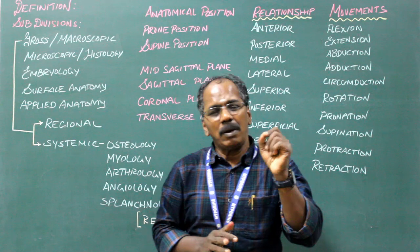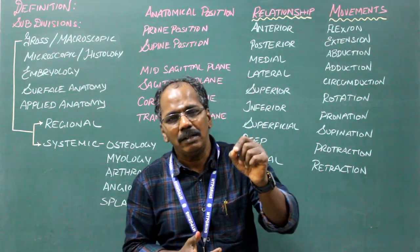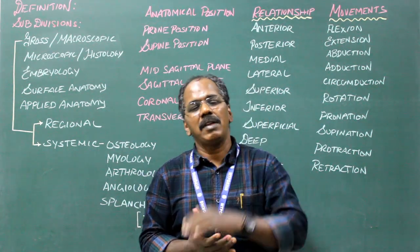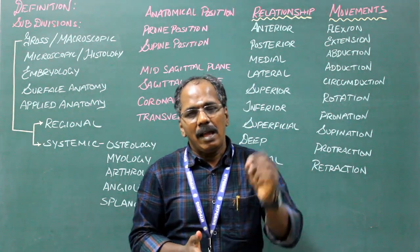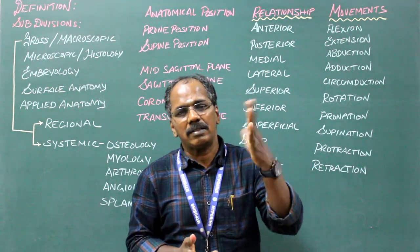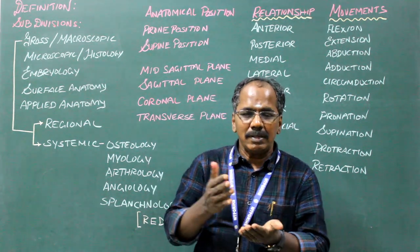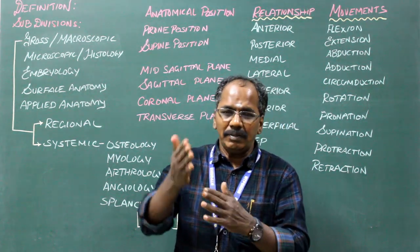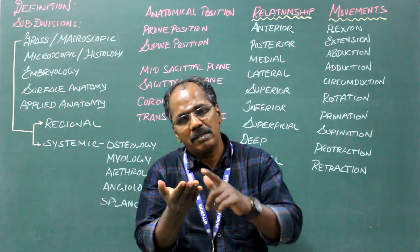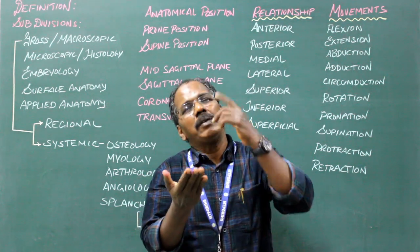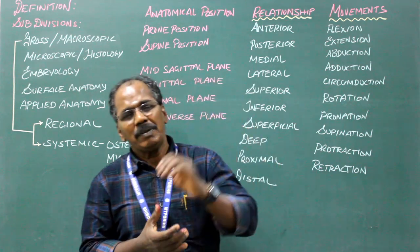Now we will see some of the terms used in anatomy. Prone position: a recumbent position with face downwards. Supine position: a recumbent position with face upwards. That is, the patient is lying either with the face downwards or with the face upwards. These are the prone and supine positions.